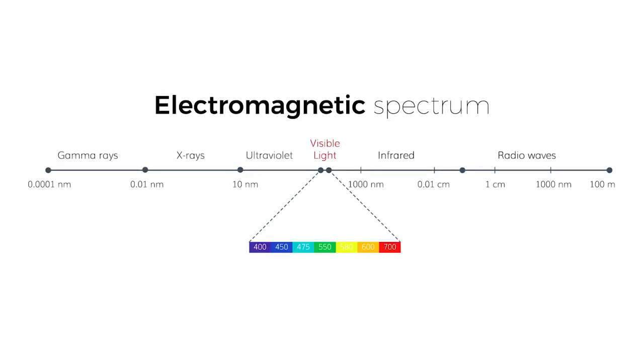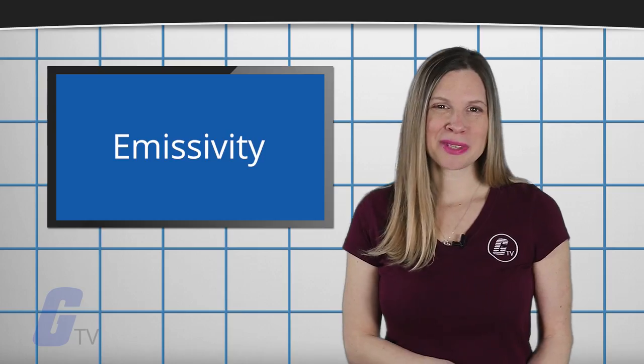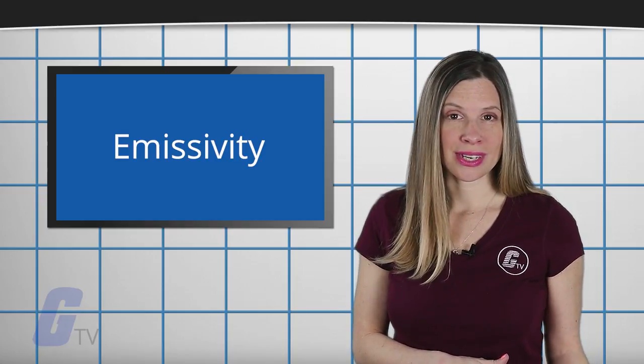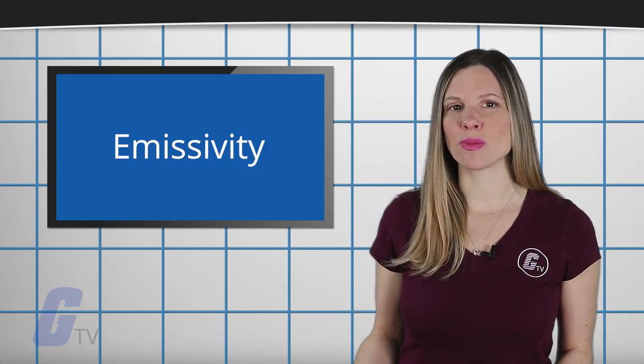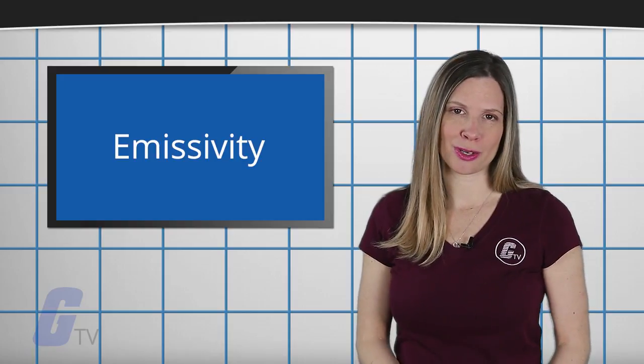Infrared is a type of energy that is emitted from the surface of all objects and is part of the electromagnetic spectrum. This works in tandem with what is known as emissivity, or the measure of the efficiency in which a surface emits thermal energy.